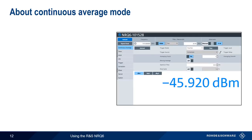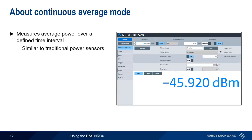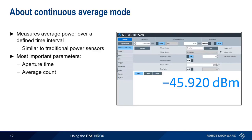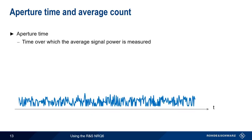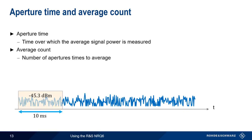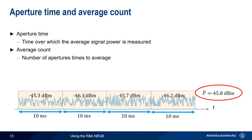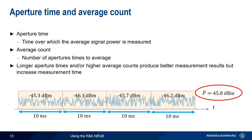The first measurement type we'll cover is Continuous Average Mode, which measures average power over a defined time interval. This is similar to the measurements made by most traditional power sensors, and yields a numeric result — for example, minus 45.92 dBm. The two most important parameters to configure are the aperture time and the average count. Aperture time is the time over which the average signal power is measured; for example, we could set our aperture to 10 milliseconds and obtain an average power of minus 45.3 dBm. Average count means the number of measurement results, or apertures, that we average to obtain a result — for example, setting the average count to 4 averages the results of 4 measurements. Note that increasing the aperture time and/or the average count will usually produce better measurement results, but will also increase measurement time.